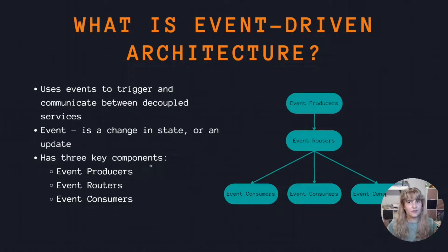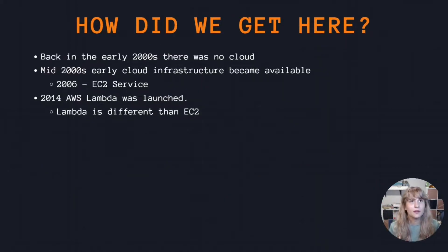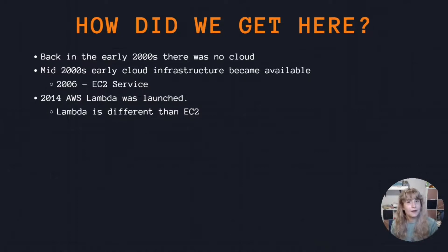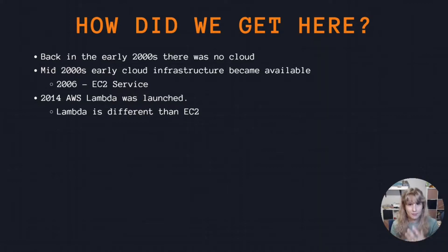Now that we understand event-driven architecture, let's talk about the history of AWS Lambda. To understand AWS, you have to go back to the early 2000s where there was no cloud. You had to buy hardware from manufacturers and wait for it to ship, then build the server, install software on it, and make it available for applications to run APIs. All of this was done on-premises.